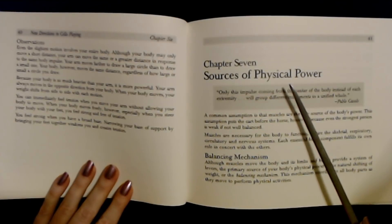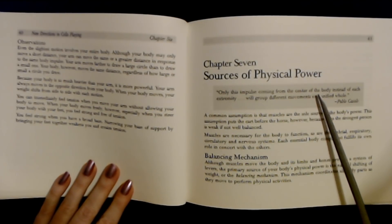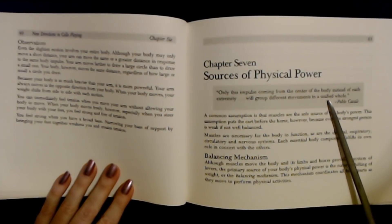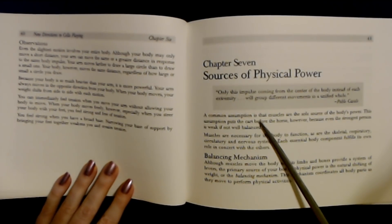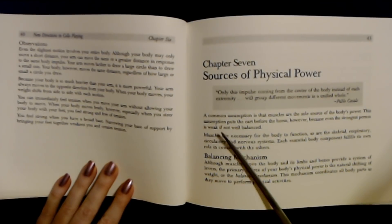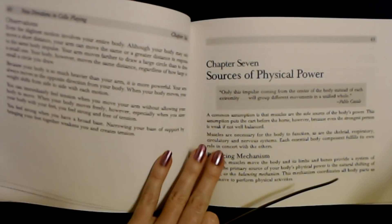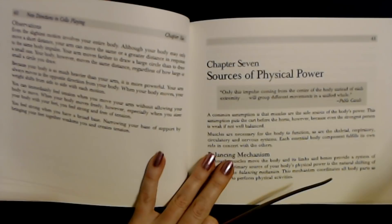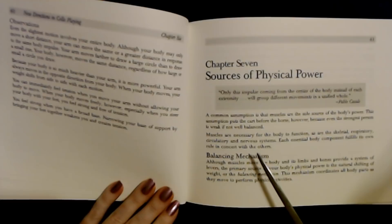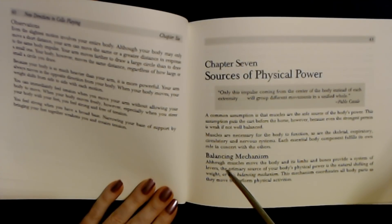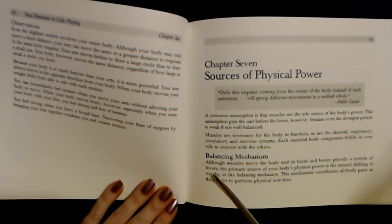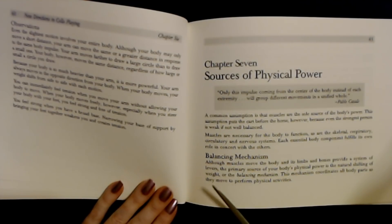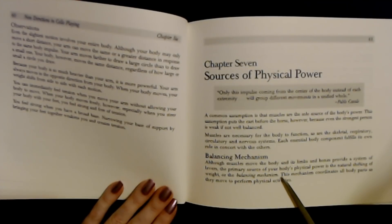Chapter Seven: A Source of Physical Power. All the separate movements coming from the center of the body instead of each extremity coordinate different movements in a unified whole. A common assumption is that muscles are the sole source of the body's power. This puts the cart before the horse, however, because even the strongest person is weak if not well balanced.